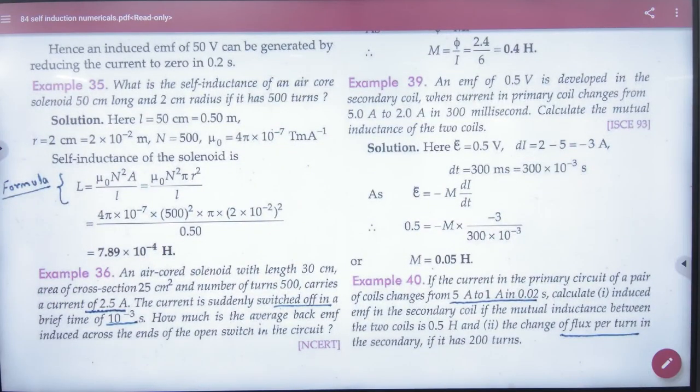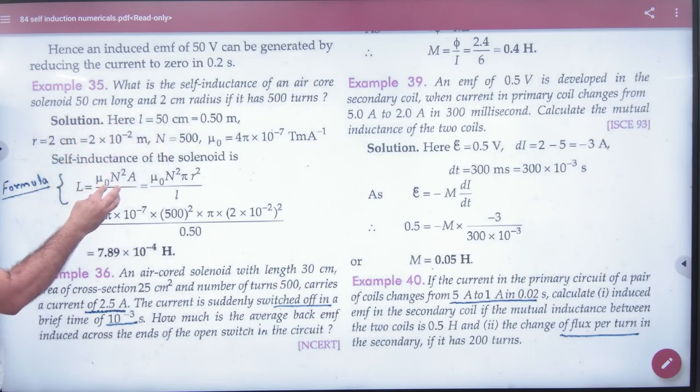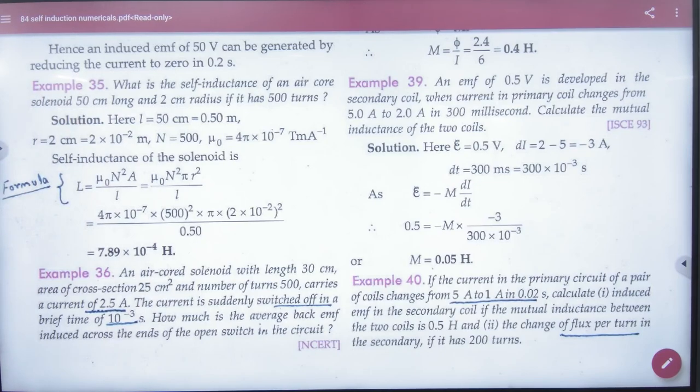Example 35: What is self-inductance of an air core solenoid? What to find? L. 50 cm long, 2 cm radius R, and number of turns are given. You need to apply L formula. L known, R known, number of turns known. L formula you know: L = μ₀N²A/l where area is πr². Formula is in this question. Normally L is given, but if L is not given, you need to find L.